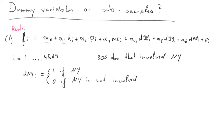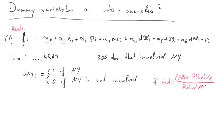We can generate a dummy variable dny, which takes the value 1 if New York is either origin or destination, and 0 otherwise. For the F-test, we need a restricted and unrestricted model. The F-statistic is calculated as: (RSS_restricted minus RSS_unrestricted) divided by the number of restrictions, divided by RSS_unrestricted divided by the degrees of freedom of the unrestricted model.